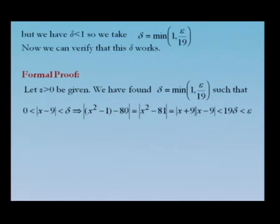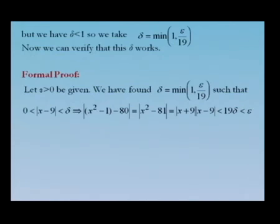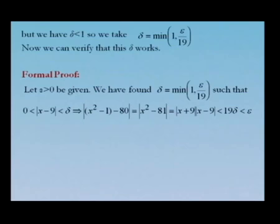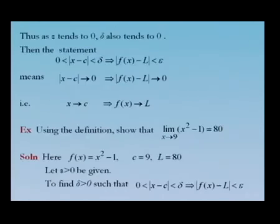We have also taken that δ < 1, so we take δ = min(1, ε/19). Now let us verify. Let ε > 0 be given. We found δ = min(1, ε/19) such that 0 < |x − 9| < δ implies |x² − 1 − 80| = |x² − 81| = |x + 9||x − 9| < 19δ < ε. This clearly satisfies the definition. Hence we have proved that limit x tends to 9 of (x² − 1) equals 80.